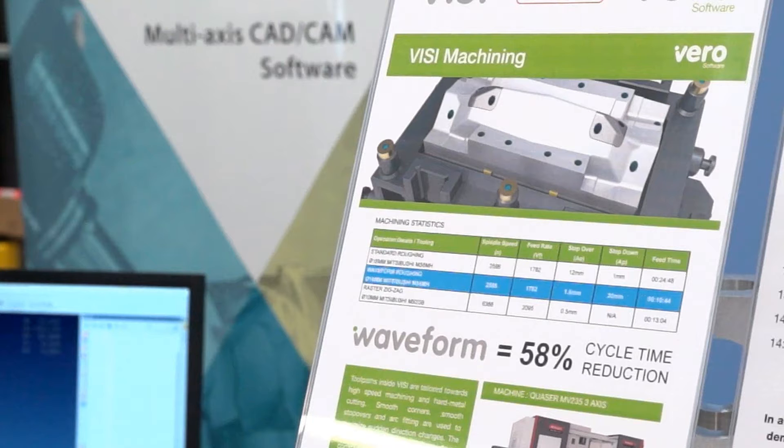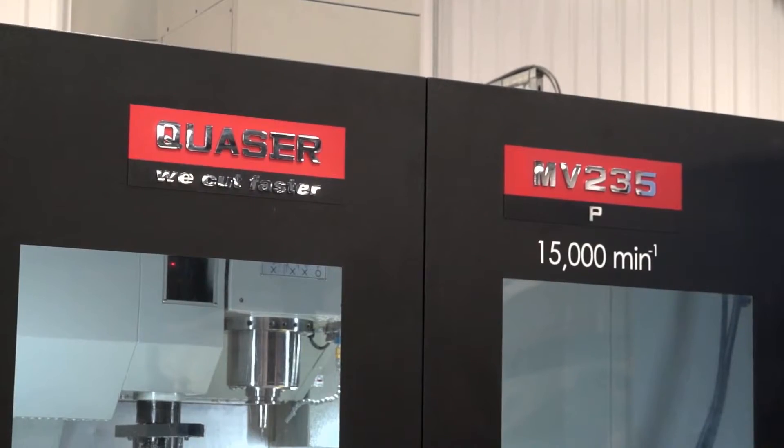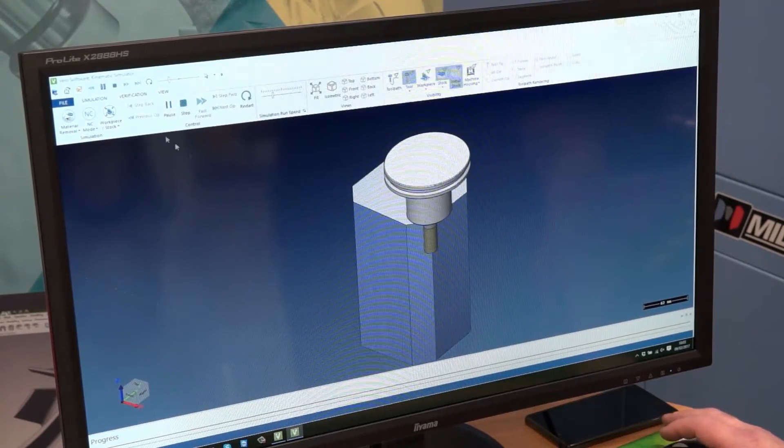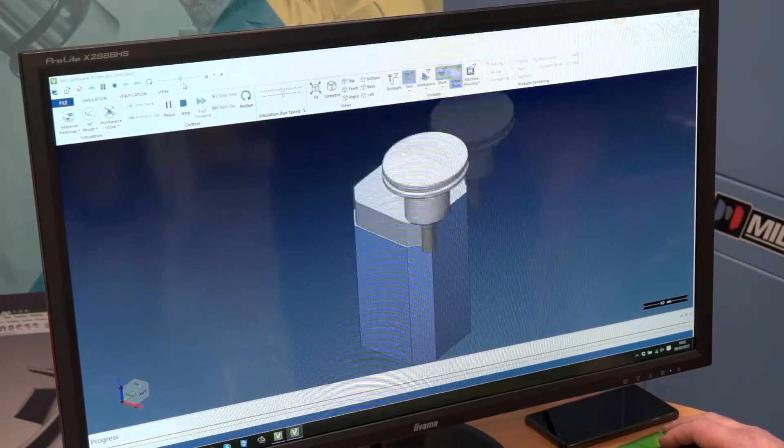And what are those strategies? We're using an automotive part and we're implementing the new waveform strategy. It's a roughing strategy that's basically a big time saver, a big tool saver as well, so it's a win-win on everything.